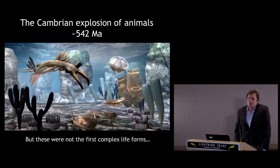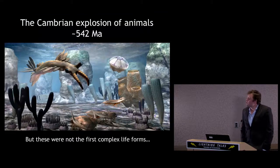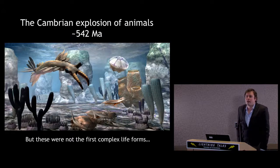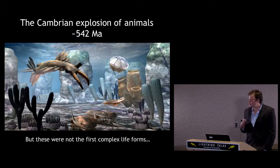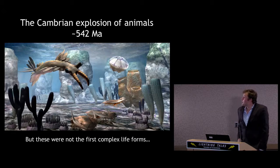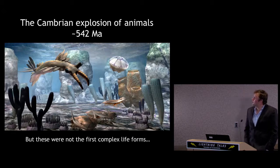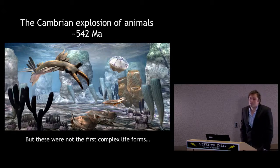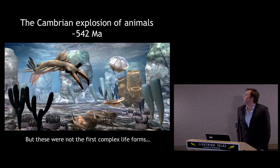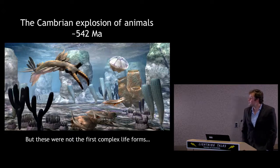Many of you will be familiar with the Cambrian explosion of animals — this dramatic period 542 million years ago where most of the major branches of animal life that we currently recognise dramatically appear in the rock record. In this rendition we have a few early members of the arthropods, the sponges, and the jellyfish happily swimming around in the Cambrian Ocean.